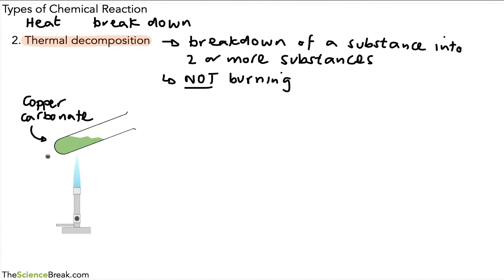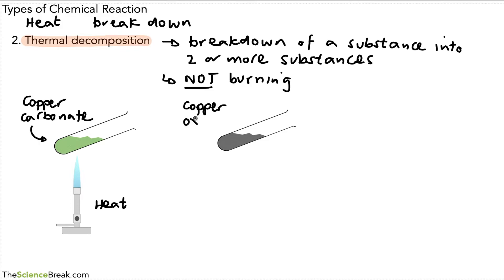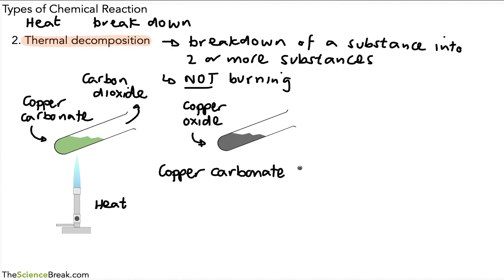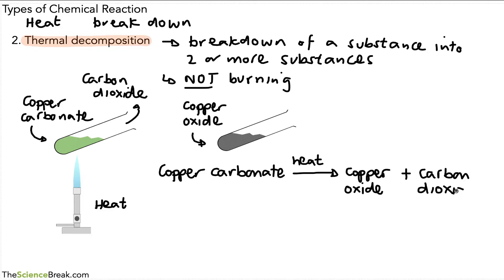One example we can use is the thermal decomposition of copper carbonate. There's copper carbonate in a boiling tube being heated up by a combustion reaction — so it's being heated, not burned. When we heat it up, it breaks down into two substances: the first new substance is copper oxide, which is black (copper carbonate is green), and we also get the production of carbon dioxide gas. We would write this as: copper carbonate → copper oxide + carbon dioxide, sometimes writing the word 'heat' over the arrow.